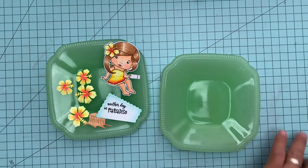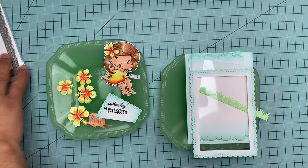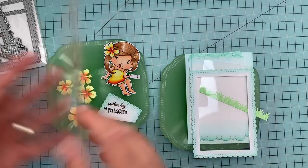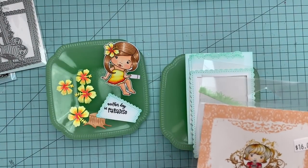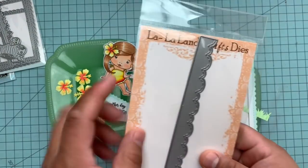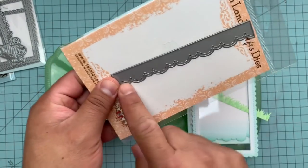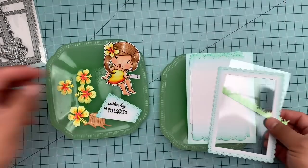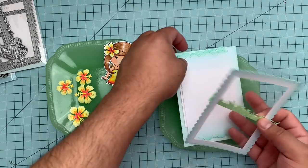I also used this one, the stitched scallops border. You can use it as a curtain, you can use it as trim, you can use it for all sorts of things. I'm going to use it on this card as water, as waves.